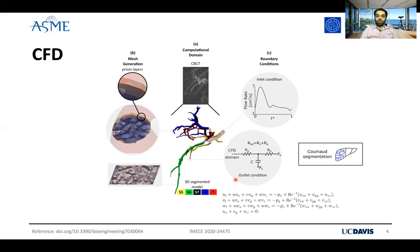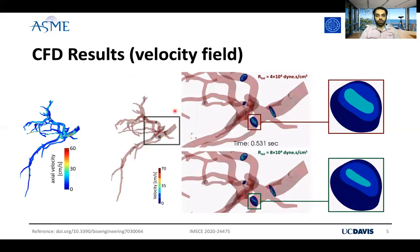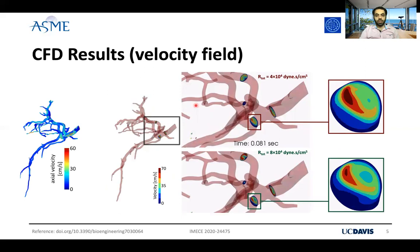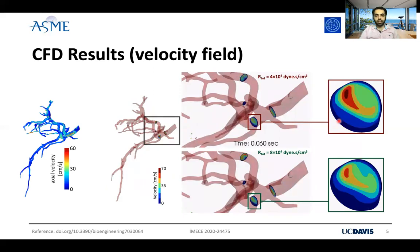We solved the conservation of momentum and conservation of mass Navier-Stokes equations to solve the flow field. A summary of the results you see here — for two different total resistance values, you see four different cross sections and how the flow distribution is changing across these different cross sections.